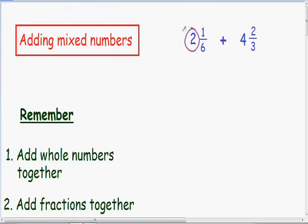Since we have a whole number of 2 in our first mixed number and a whole number of 4 in our second mixed number, I'm going to add those two whole numbers together in purple. And since we have a fraction of 1/6 in our first mixed number and a fraction of 2/3 in our second mixed number, I'm going to add those two fractions together in green.